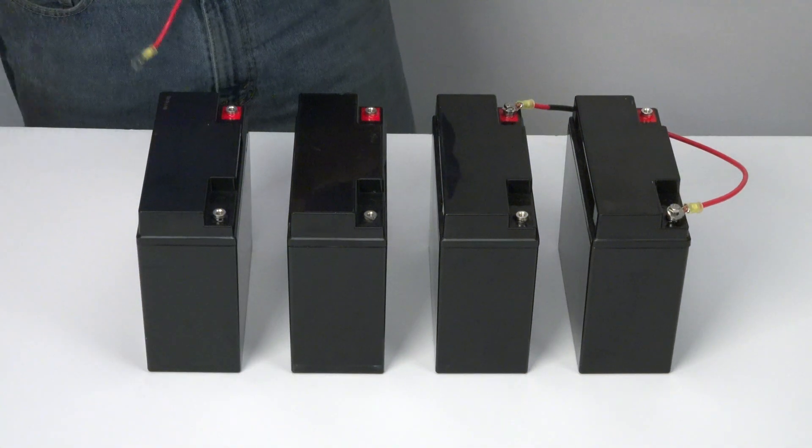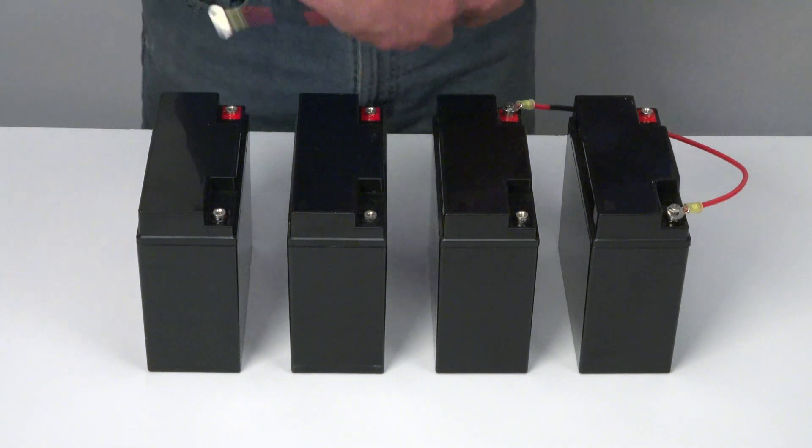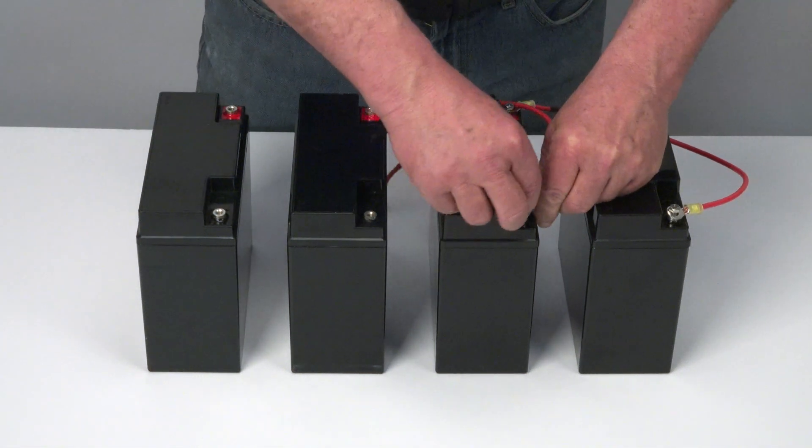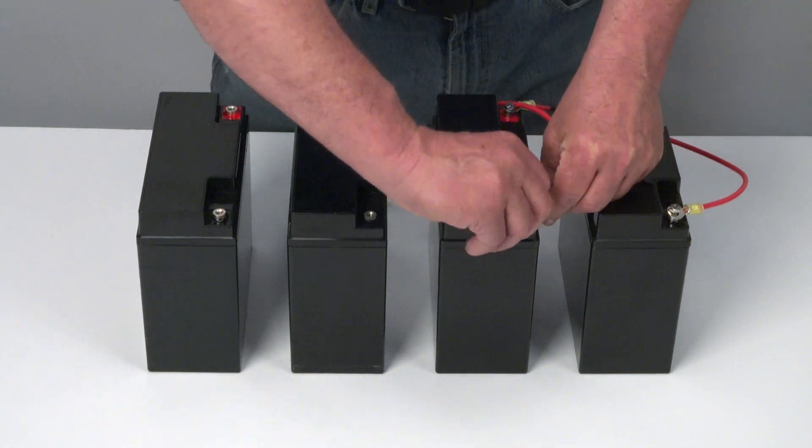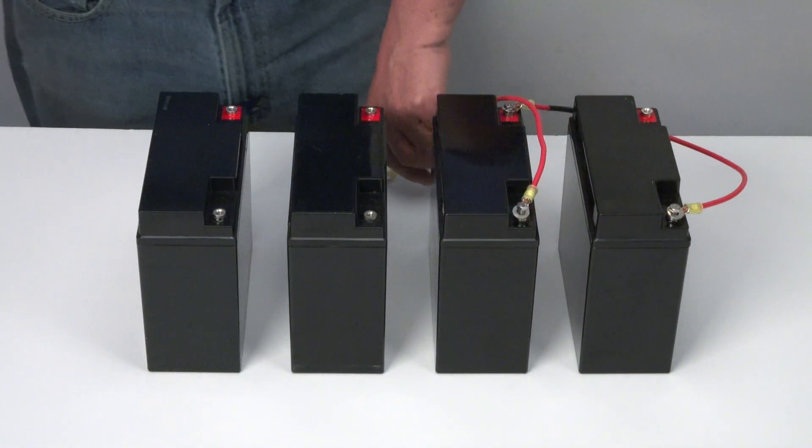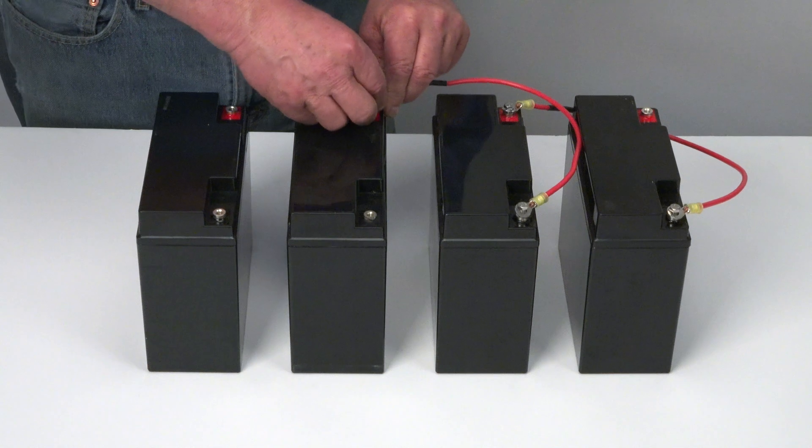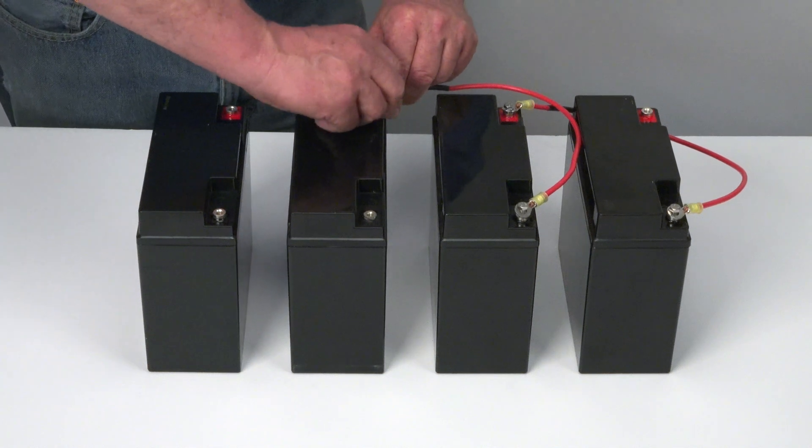Likewise, if you continue the sequence and you connect the negative terminal of the second battery to the positive terminal on the third battery, you'll be making a 36 volt array.